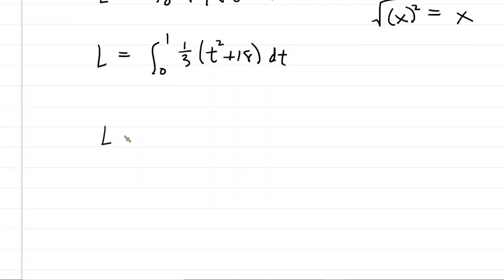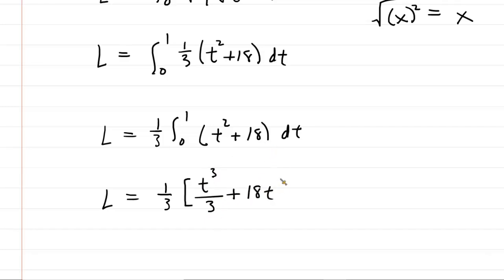Why don't we factor out the 1/3? And now we are left with a relatively, in fact, very easy integral here. So, we'll go ahead and integrate using some basic power rules once again. So, t squared, you just add 1 to the exponent, that becomes t cubed, and then you divide by that new exponent. And then the integral of 18 with respect to t is just 18t. We're integrating from 0 to 1.